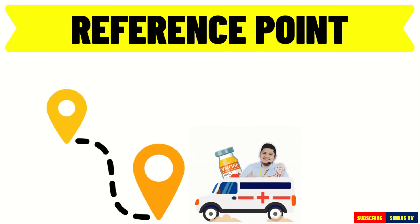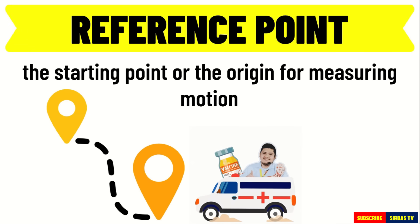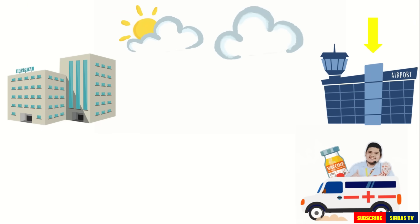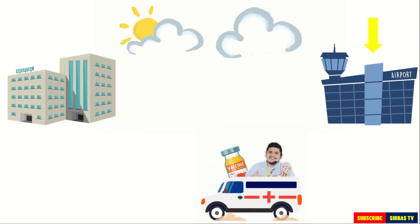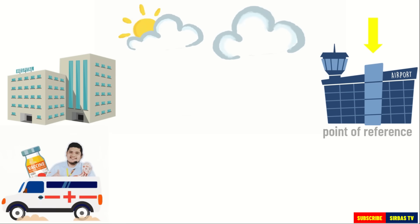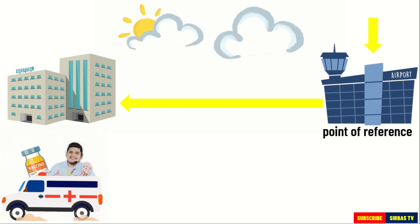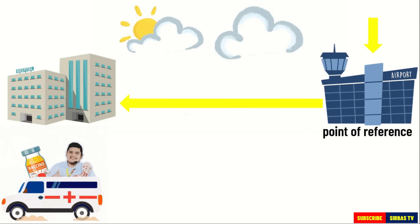To find out if there is a change in position, we use a reference point. A reference point is defined as the starting point or the origin for measuring motion. It is our basis in determining if an object is changing its position. In our previous example, the airport is where the ambulance started moving. So in this case, the airport is our point of reference. In reaching the hospital, the ambulance changes its position or location from the airport to the hospital. Therefore, motion has been observed.